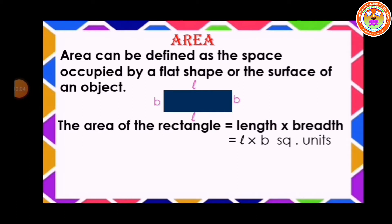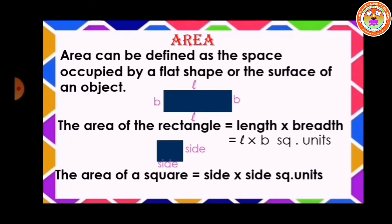Coming to square. We have already seen that square has four equal sides. Therefore, the formula of the area of the square is equal to side into side square units.